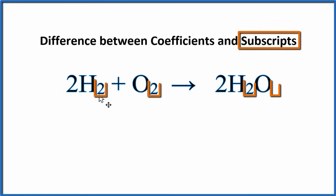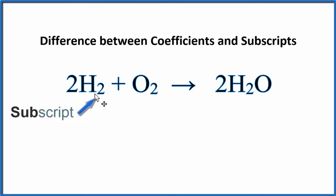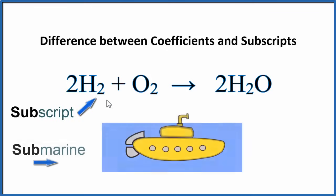Subscripts are different. They're smaller, and they only apply to one element. So this 2 applies to the H, this 2 applies to the O, we have a 2 here with the H, and if there's nothing written, we consider there to be a 1 here. Subscripts are smaller, and they kind of go below the elements, much like a submarine goes below the water.